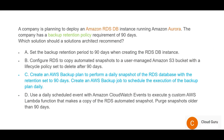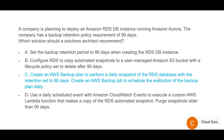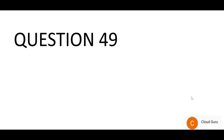Option D talks about using CloudWatch Events to schedule backups — nobody uses events to schedule backups. It also says to execute a Lambda function to make a copy of the RDS automated snapshot. Lambda expires in 10 to 15 minutes, so if your backup takes longer than that, Lambda will auto-kill itself. If your database is very large you will never complete the backup operation, hence option D is wrong. We go with option C and move forward.